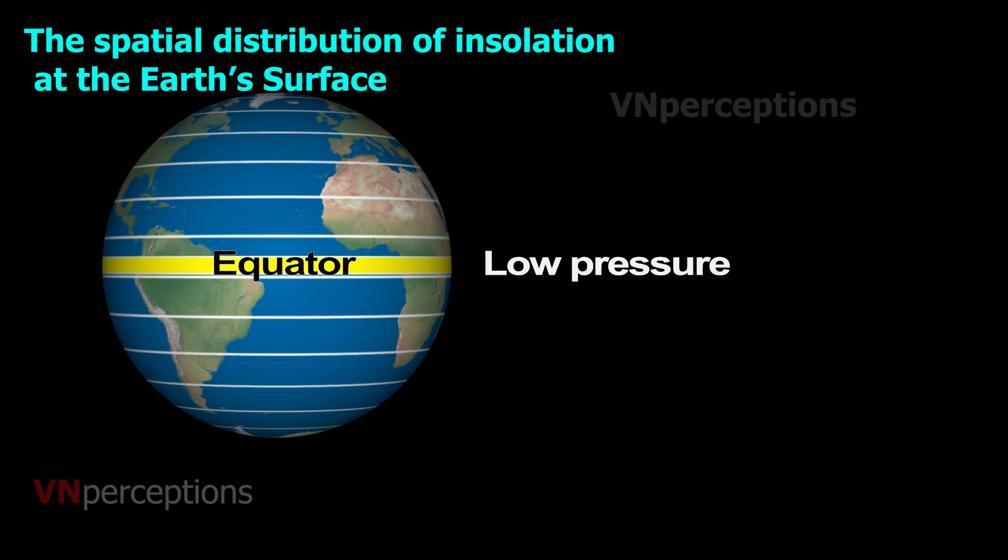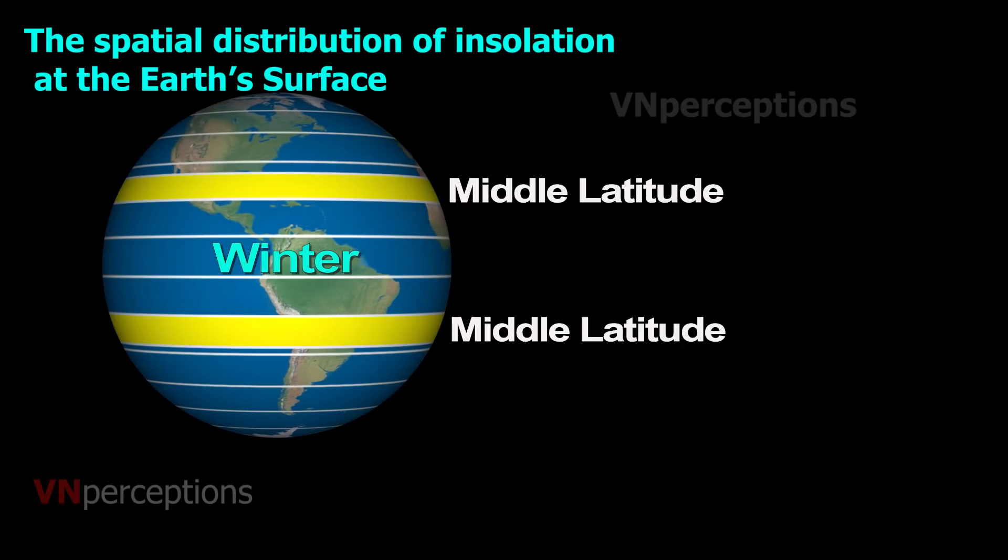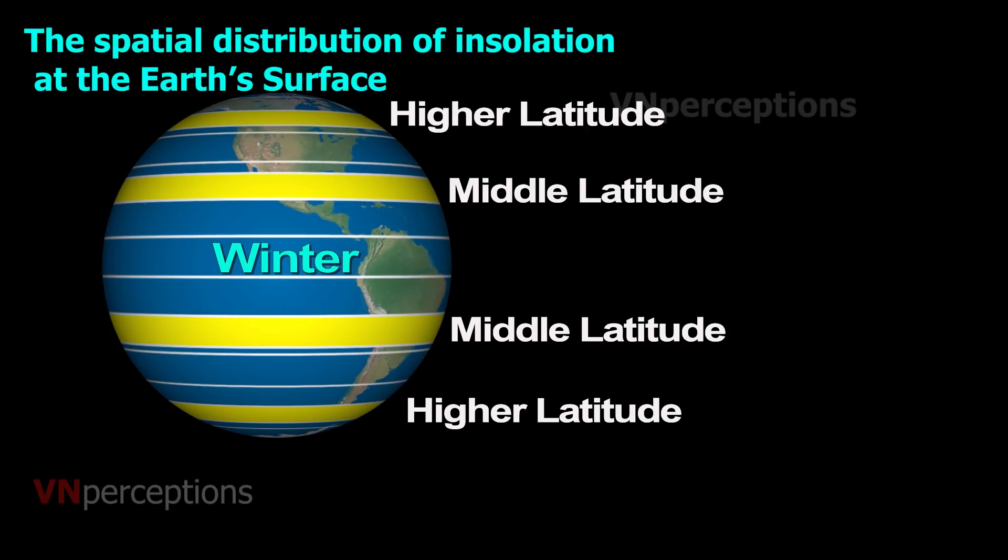In winter, the middle and higher latitudes, areas around 30 degrees and 60 degrees and more respectively, receive less radiation than in summer.